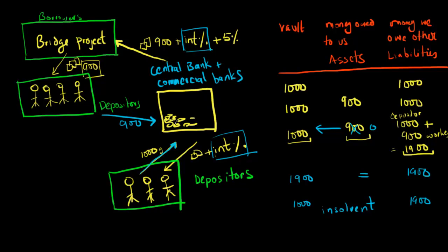So that would mean that to actually meet all their redemptions, the commercial banks would have to have 1,900 gold coins in the vault, which they don't have. They only have 1,000. And so if that happens, that's typically called a liquidity crisis.